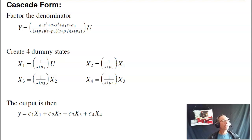Fourth version, cascade. This one actually has better numerical properties. If I took my system and I have four real poles and factor it, I can rewrite the system in this form. I'm going to create four dummy states. The input goes through a first order system that feeds another first order system that feeds a third first order system that feeds a fourth system. Simple systems work better than complicated systems.